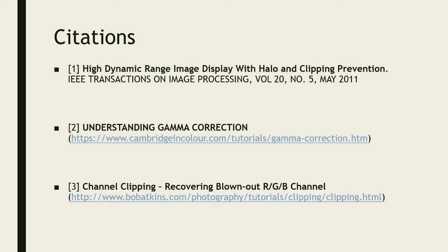That concludes the presentation. The first resource is the paper itself, but researching it also required looking into gamma correction — it turns out that when a JPEG is made, the camera already clips intensities for you. Understanding how standard cameras deal with different light intensities was necessary before understanding how this paper addressed them. Thank you.